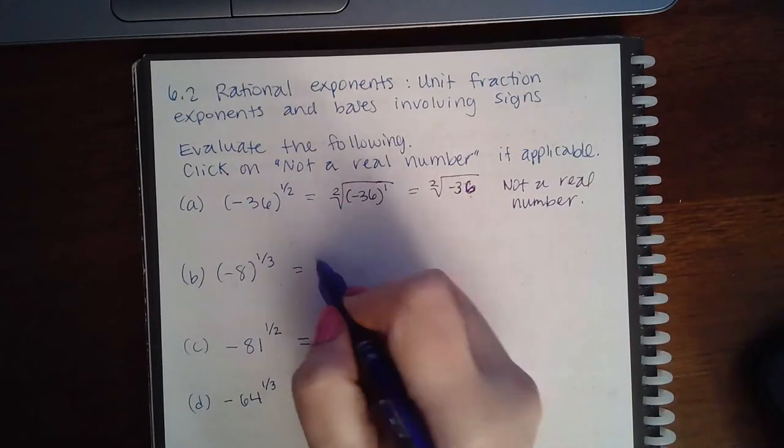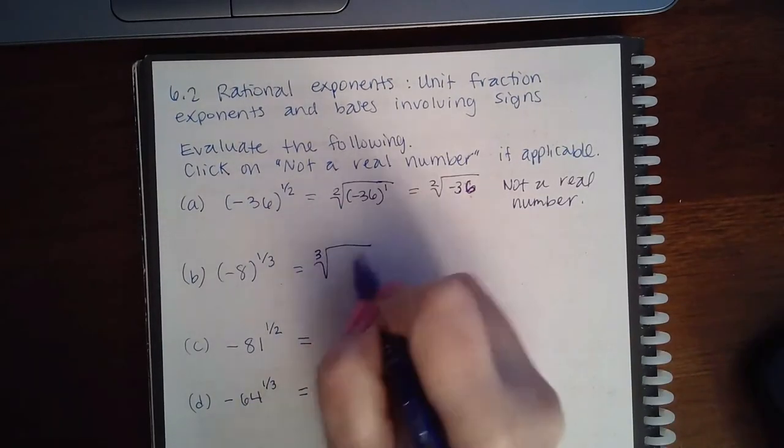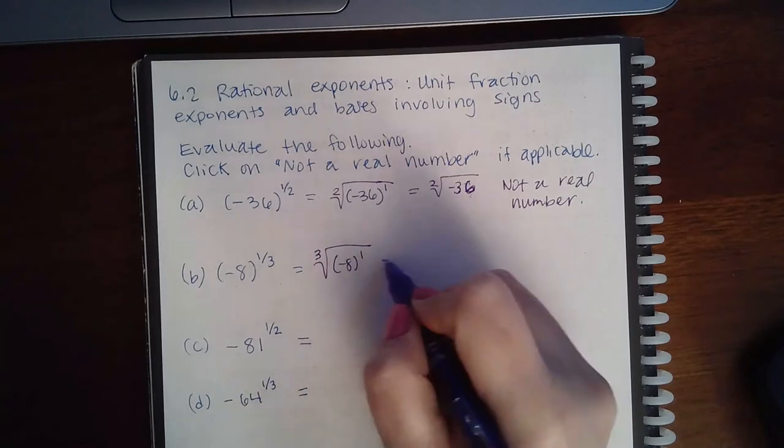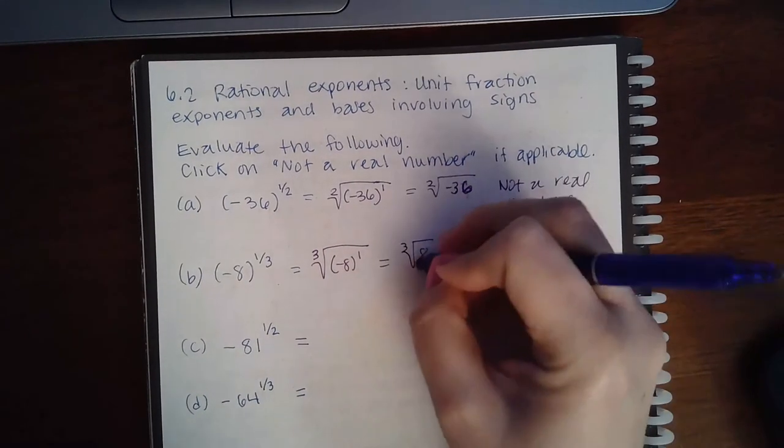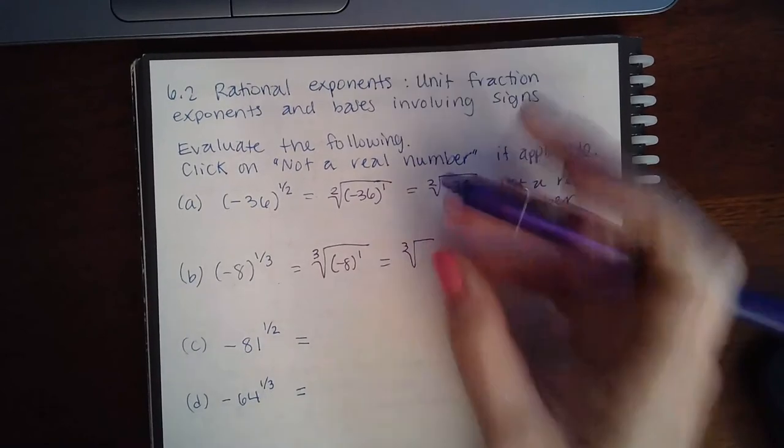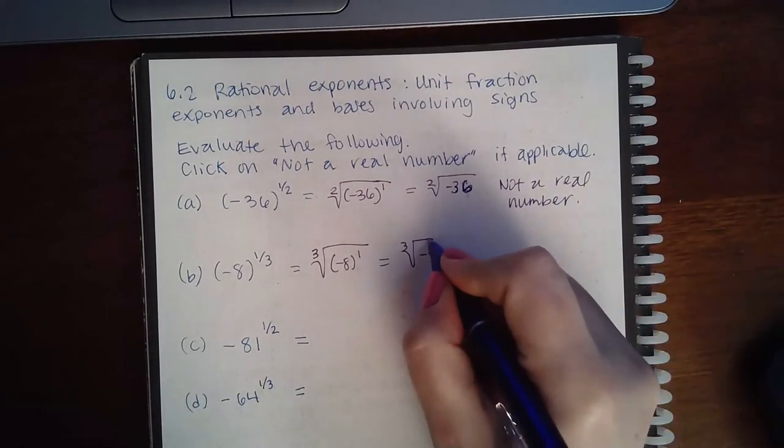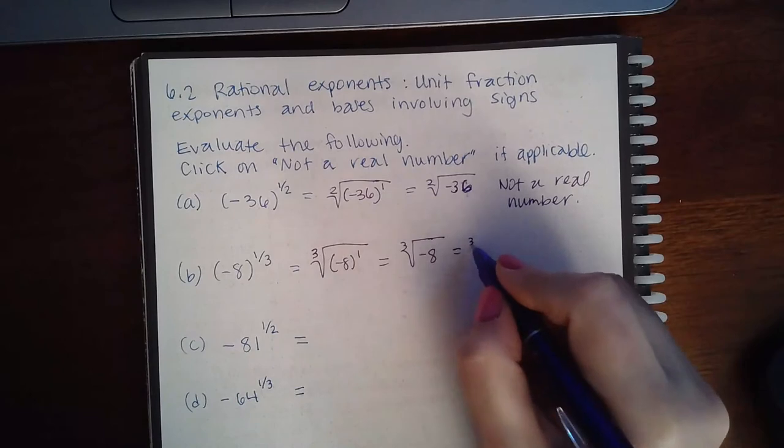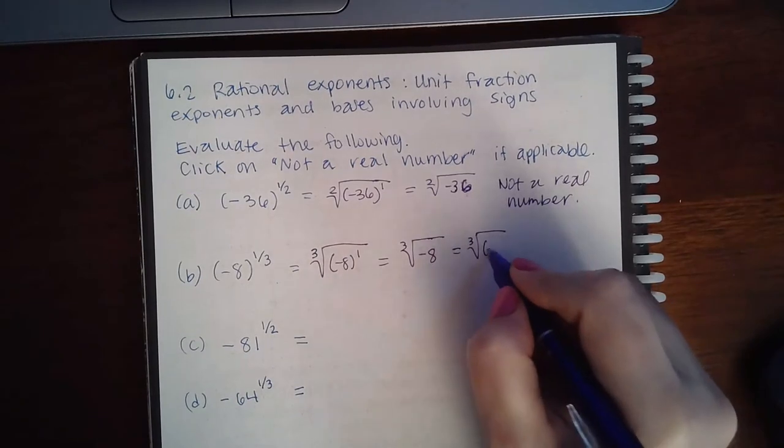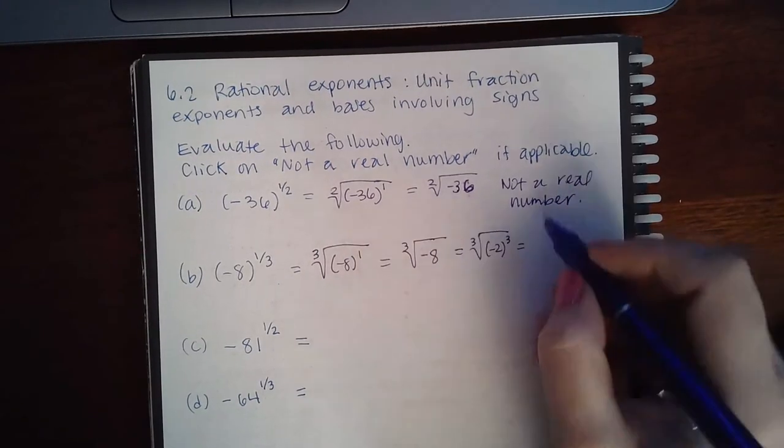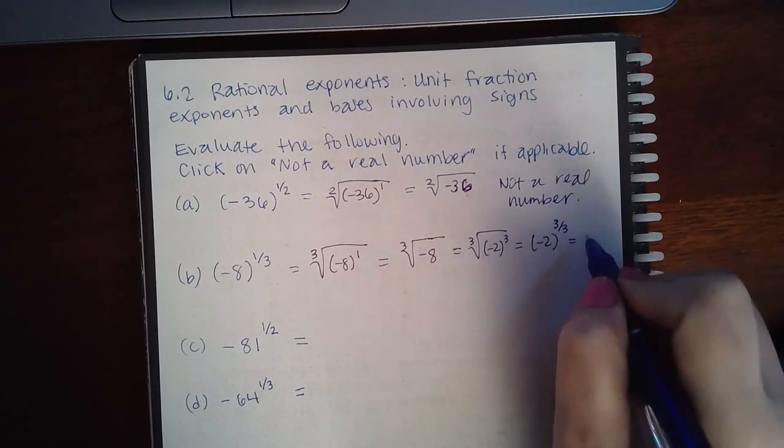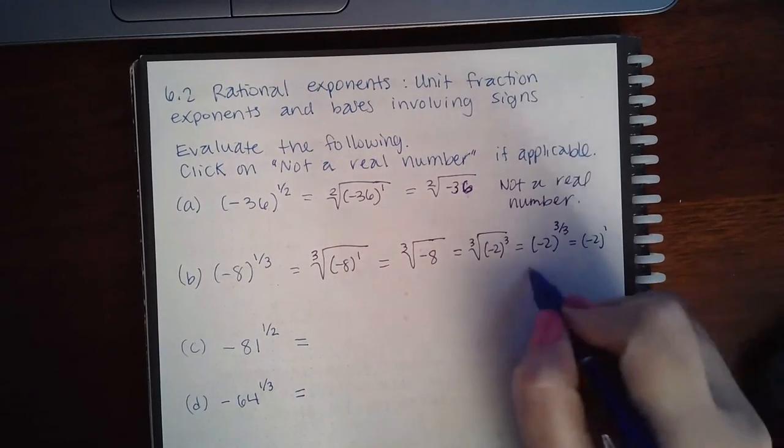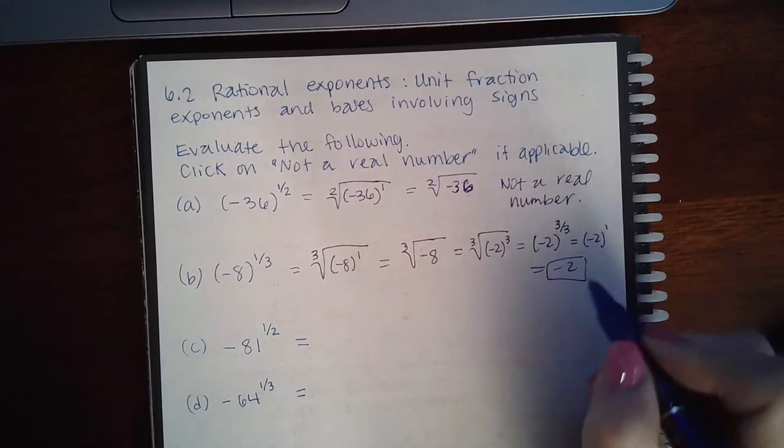Then here, if we convert it over to radical form, we have the cube root of negative 8 to the first power, which is the cube root of 8—I'm sorry, it's the cube root of negative 8. And we know that the cube root of negative 8 is the same as negative 2 to the third power. So negative 2, 3 over 3, which is negative 2 to the 1, or just simply negative 2.